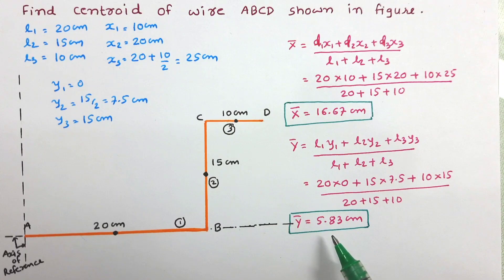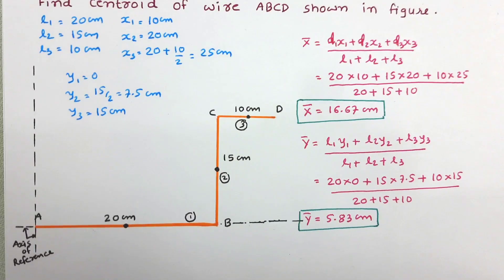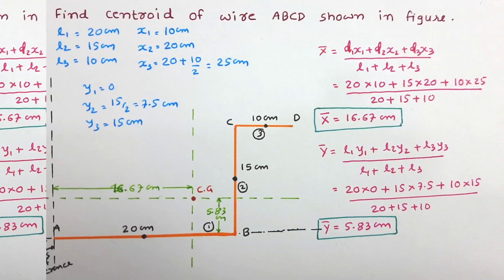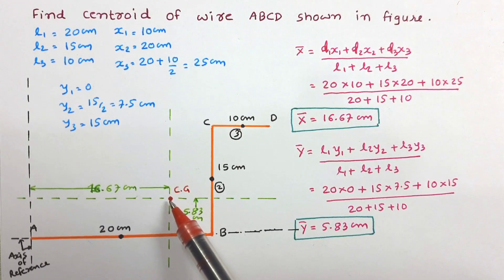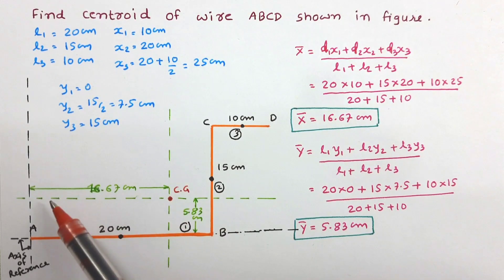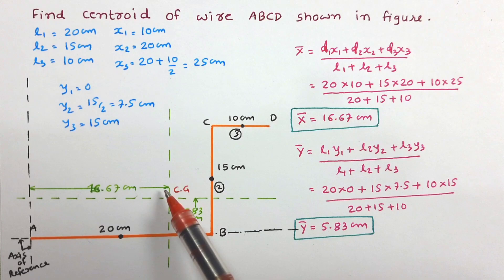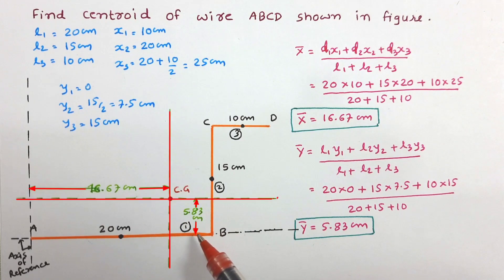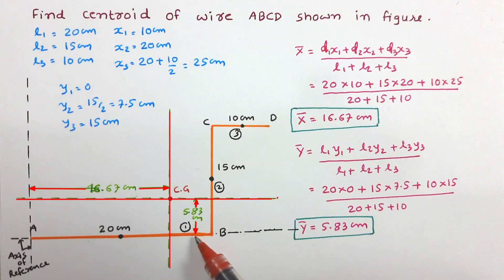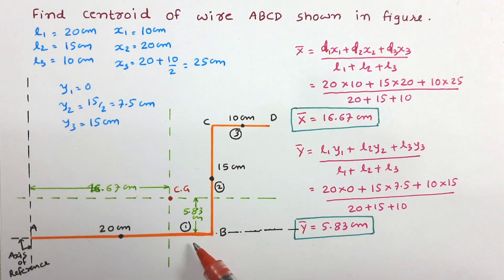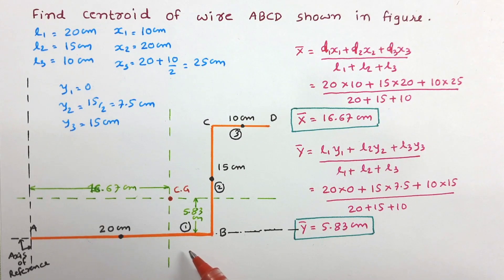Now let us mark the centroid in the figure. So this point is centroid of the figure, which is at 16.67 cm along x axis and 5.83 cm along y axis. So this way such problems can be solved.